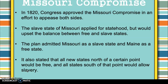In 1820, Congress approved the Missouri Compromise — an effort to appease both the North and the South. The slave state of Missouri had applied for statehood, but it would upset the balance between free and slave states since there was an even number of both. The plan was to admit Missouri as a slave state and admit Maine as a free state. It also stated that all new states north of the Missouri Compromise Line would be free states, and all states south of that line would allow slavery.